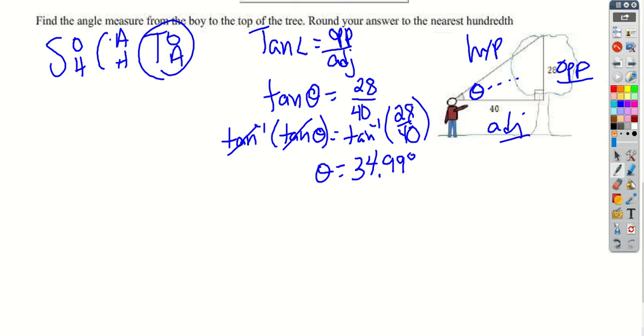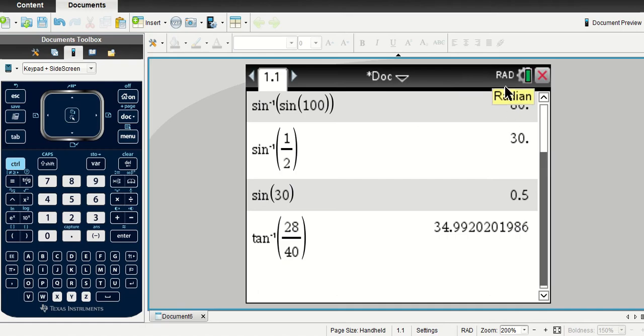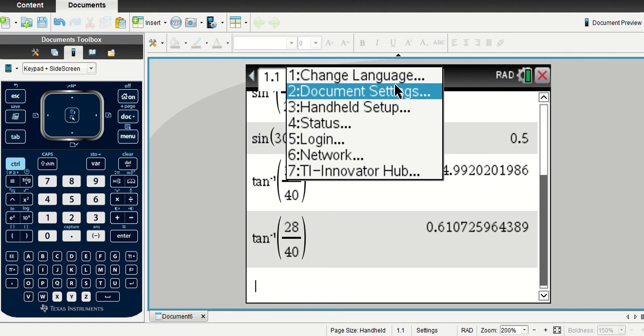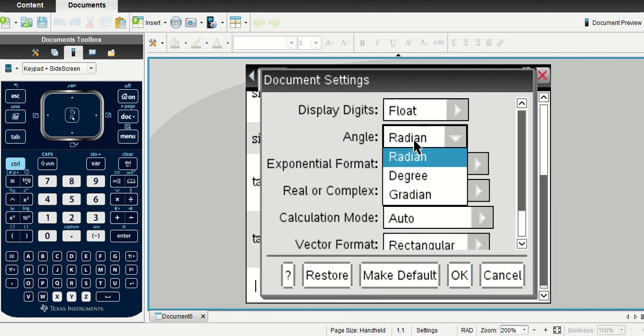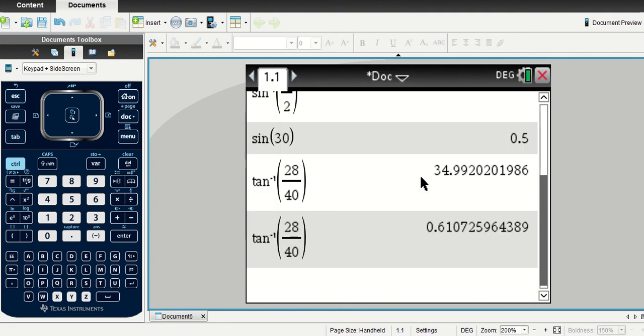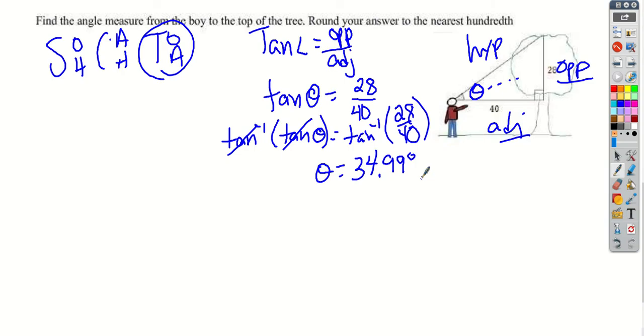This tangent and the tangent inverse undo themselves. On my calculator, I'm going to hit trig, tangent inverse, and then 28 over 40. I'm rounding to the nearest hundredth, so that's 34.99 degrees. Make sure our calculator appears in degree mode. If your calculator is in radian mode, notice that if we try to redo this, we get a totally different answer. So if you get a crazy answer, it's probably because you're in radians. Click on the settings wheel, go to document settings, and then change radian to degree. That's it.